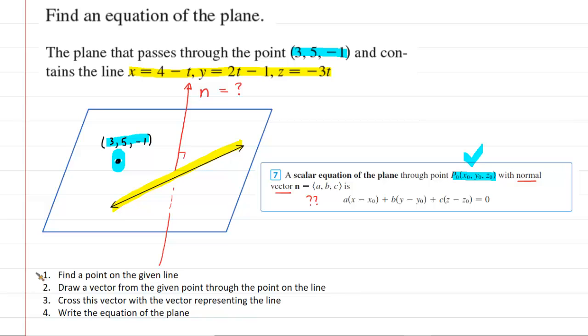In the first step, what we're going to do is simply find a point on this given line, which we have highlighted in yellow. You can do that by selecting any value that you want for t. You could plug in t is equal to zero. You could plug in t is equal to a thousand. And it's going to be easiest, of course, to make t equal to zero.